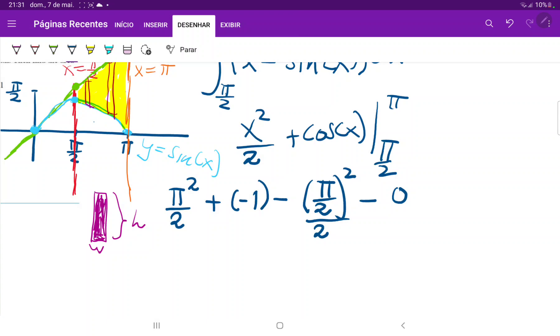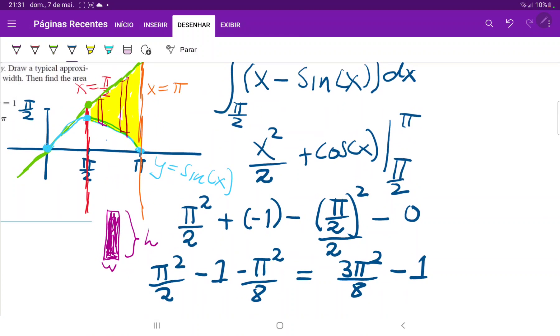So when we clean this up a little bit, we have this is pi squared over 2 minus 1, and this is pi squared over 2 squared over 2, so minus pi squared over 8. To express this in a neater way, this will give us 3 pi squared over 8 and then minus 1. So this is the area that is enclosed in between these four curves.